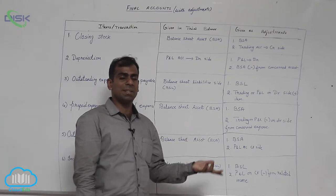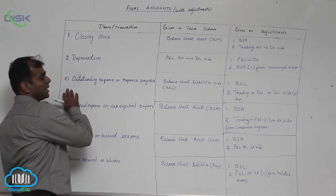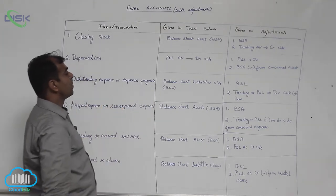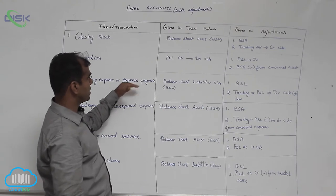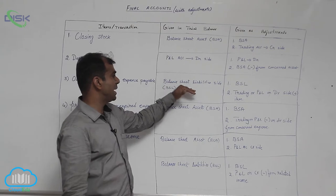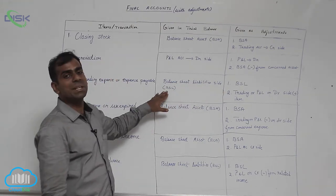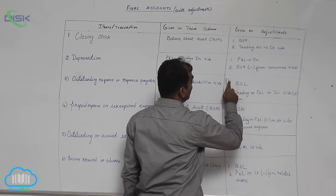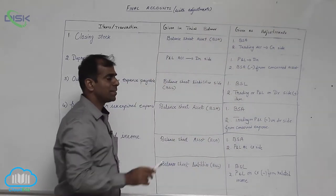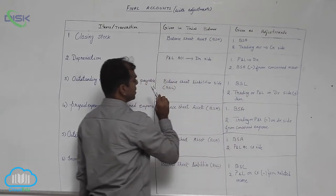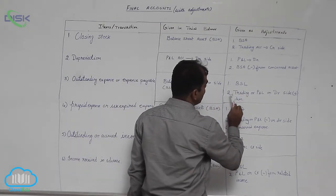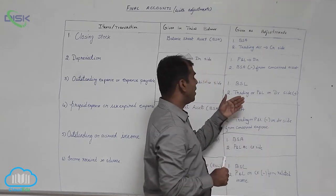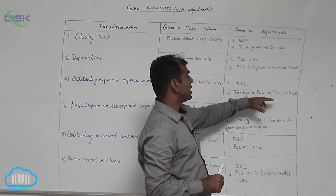Outstanding expense, expense payable, or expense due are all the same. If outstanding expense is given in trial balance, you will take it only in the balance sheet liability side (BSL). If given as adjustment, the treatment is: first, record it on the balance sheet liability side since outstanding expense is a personal account; second, record it on the debit side of trading account or P&L account. If the expense already exists, the outstanding amount would be added to it.